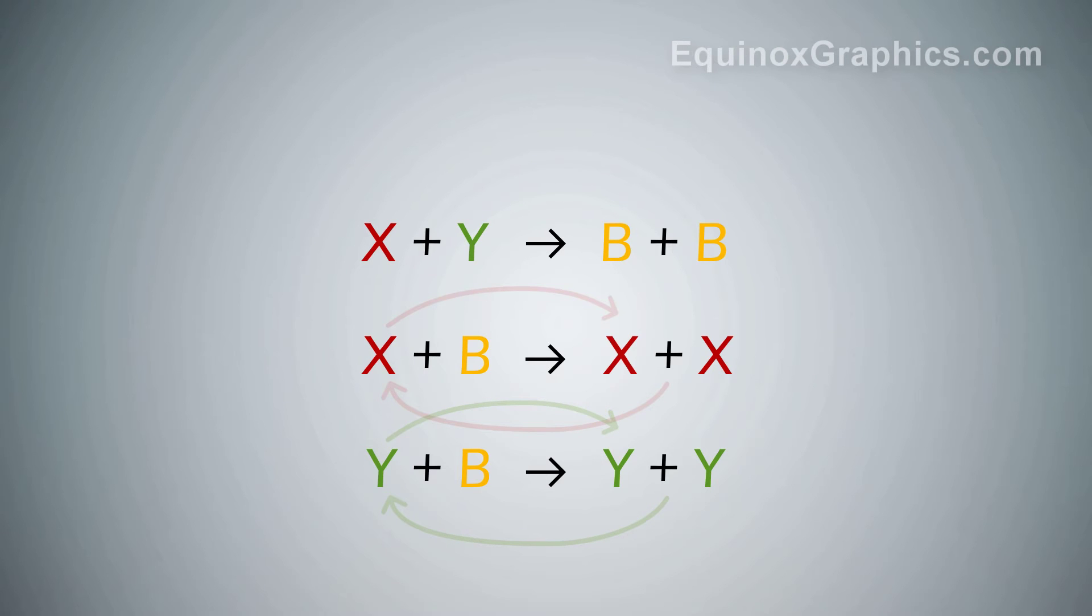Whichever population is in excess will out-compete the other and eventually convert the intermediate back to itself so that an overall consensus is reached.